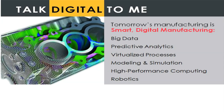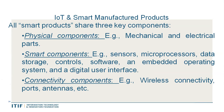Smart and digital manufacturing is the new era. IoT and smart manufacturing involves smart products with a physical component — electrical and mechanical — and a smart component including sensors, microprocessors, storage, control software, embedded operating systems, digital user interfaces, and wireless connectivity. Physical components, smart components, and connectivity components together create smart products, and we are moving toward this era of smart products.